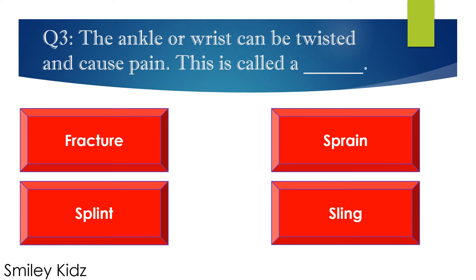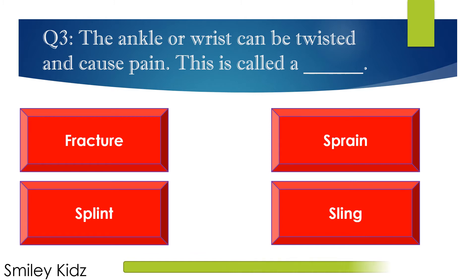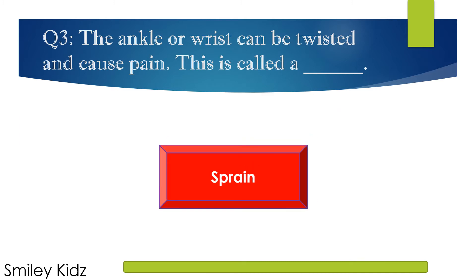Question number 3. The ankle or wrist can be twisted and cause pain. This is called? Options are A. Fracture, B. Sprain, C. Splint, and D. Sling. Your time starts now. Your time is up. The right answer is sprain. The ankle or wrist can be twisted and cause pain — this is called sprain.